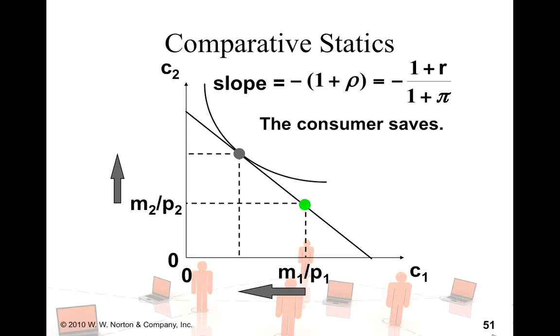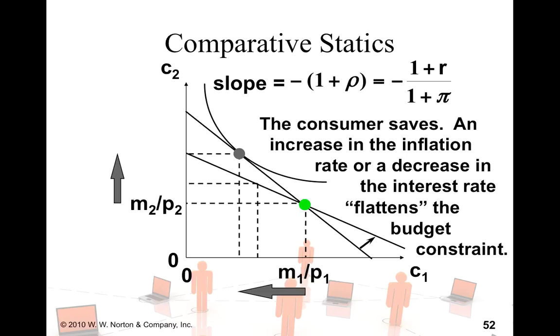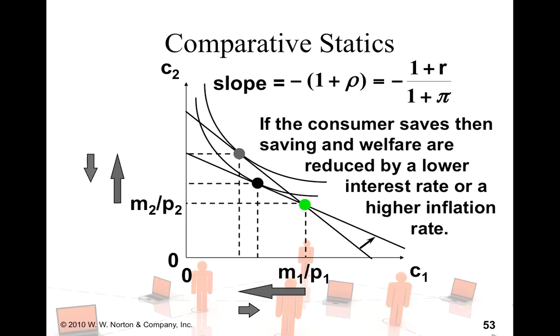Let's say that this consumer is saving here. An increase in the inflation rate or a decrease in the interest rate flattens the budget constraint. It reduces the returns to savings. So, if the consumer saves, then saving and welfare are reduced by a lower interest rate or a higher inflation rate.